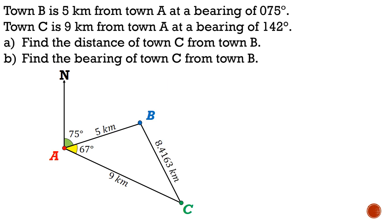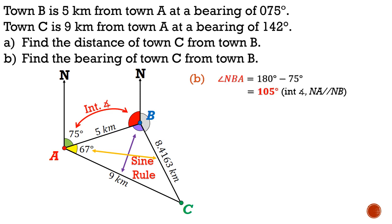To find the bearing of town C from town B, marked here in grey, we need to use angles about a point. So we just need to find out this red and this purple angle. This red angle can be found using interior angles, because the green and red angle add up to 180 degrees. For the purple angle, we notice that it is opposite this 9km, whereas the yellow angle, 67 degrees, is opposite the answer that we found in part A. This points us to the use of sine rule. Now let's carry out the plan. We find the red angle by taking 75 degrees away from 180 degrees, giving us 105 degrees. This is interior angles.